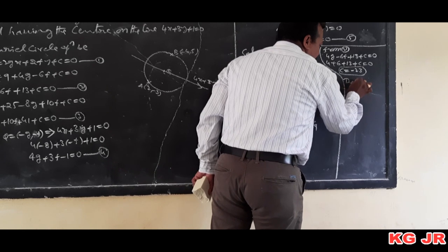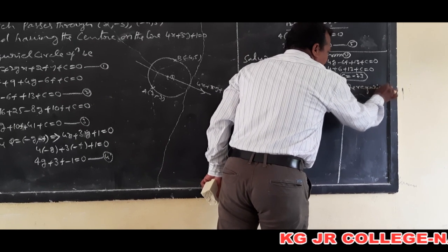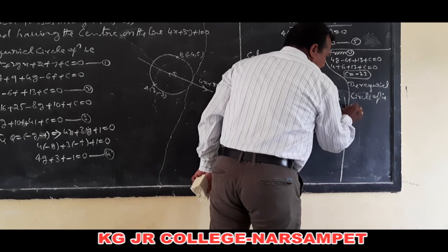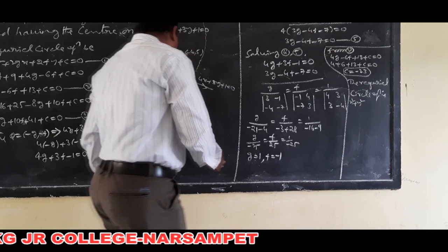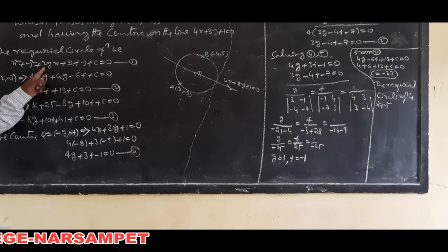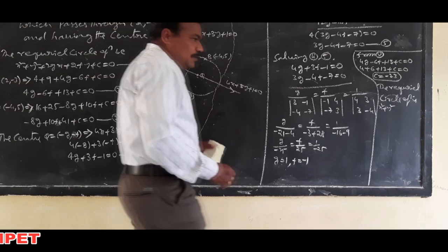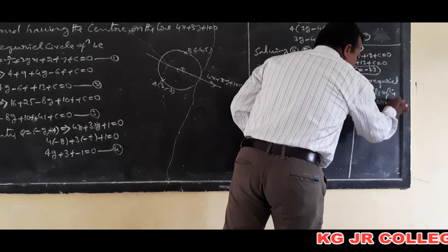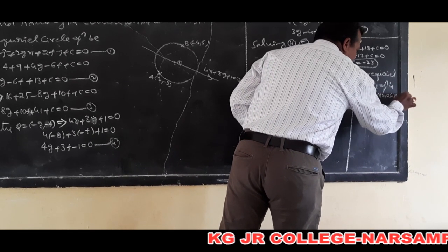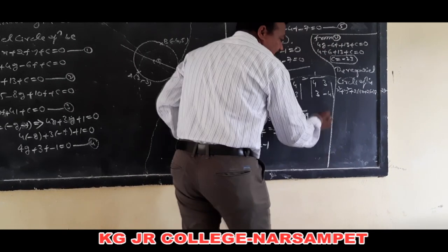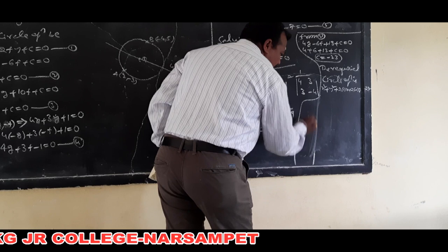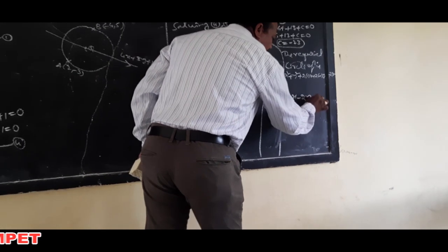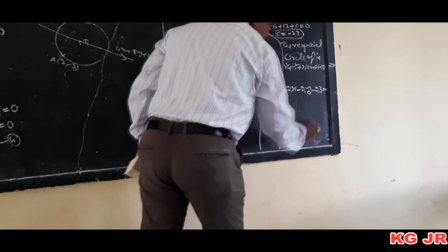Finally, the required circle equation. Substituting g = 1, f = -1, and c = -23 into the general form x² + y² + 2gx + 2fy + c = 0: x² + y² + 2(1)x + 2(-1)y + (-23) = 0. The circle equation is x² + y² + 2x - 2y - 23 = 0.